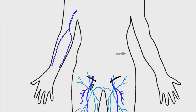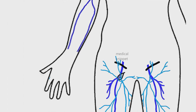Superficial veins run along the subcutaneous tissue, superficial to the fascia. They course away from the pressure points, so superficial veins are absent in the palm, ulnar border of forearm, and in the back of the arm. The major superficial veins in the upper limb are the basilic and cephalic veins.